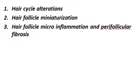The pathogenesis revolves around three main factors. Number one is hair cycle alterations. As we all know, there are three phases in the hair cycle: the anagen or growth phase during which the hair grows; the catagen or transition phase; and the telogen or resting phase. In androgenetic alopecia, most of the hair in the anagen phase shift to the telogen or resting phase.